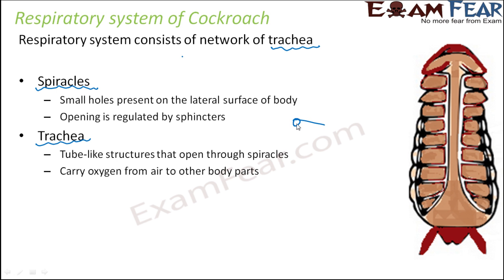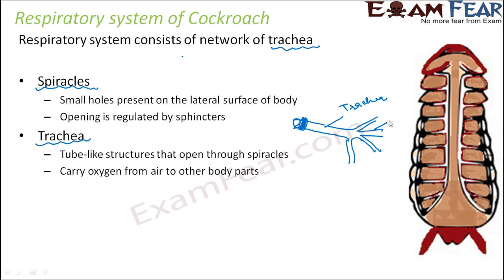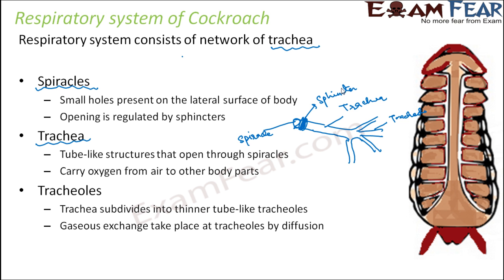If this is a sphincter, this hole is the spiracle, and this is your trachea — the tube-like structure. This trachea will branch out to form tracheoles. So this is the trachea, these are the tracheoles, this hole is the spiracle, and this is the muscular sphincter. Trachea subdivides into thinner tube-like tracheoles, and gaseous exchange takes place at tracheoles by diffusion.